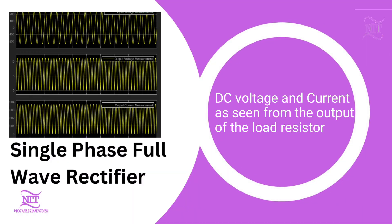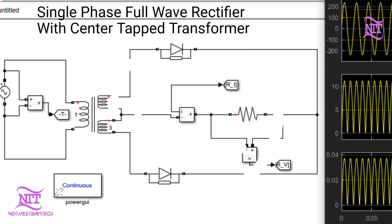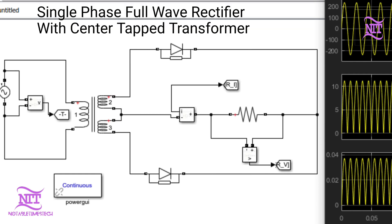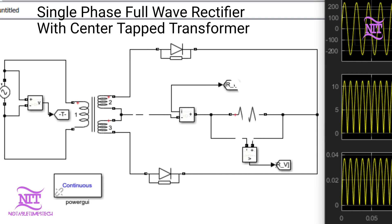Hence, the voltage and current seen from the load resistor are in DC form, as seen in the image. In this tutorial, you are going to learn how to design a single-phase full wave rectifier with a center-tapped transformer.